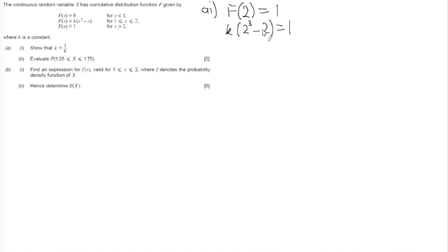So 2 cubed is 8 minus 2 is 6, so I get 6k is equal to 1, and so therefore, k is equal to 1 sixth. And that is it.